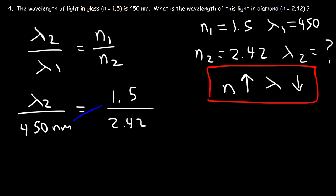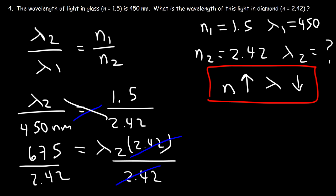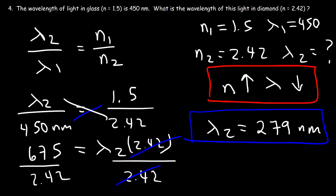Cross-multiplying: 450 times 1.5 is 675, and that equals lambda 2 times 2.42. Dividing both sides by 2.42, lambda 2 — the wavelength in diamond — is 675 divided by 2.42, which is approximately 279 nanometers. And you can see it's a lot less than 450.